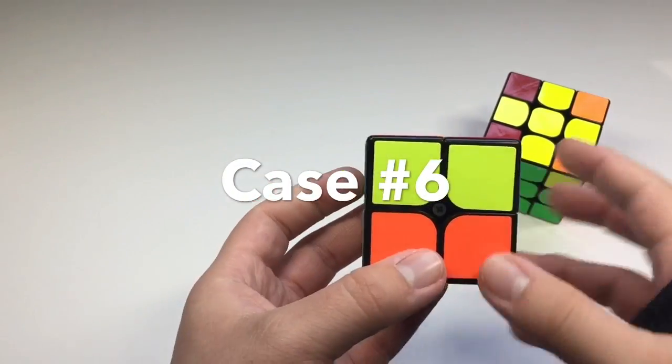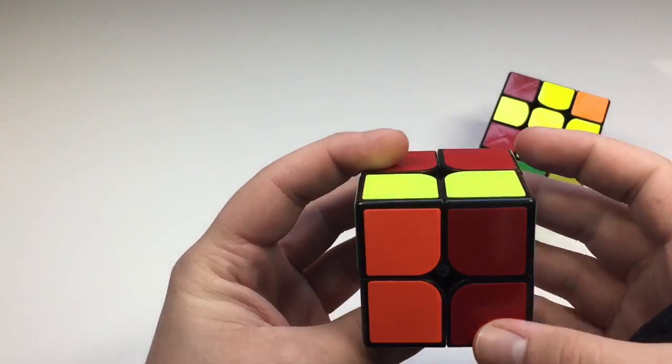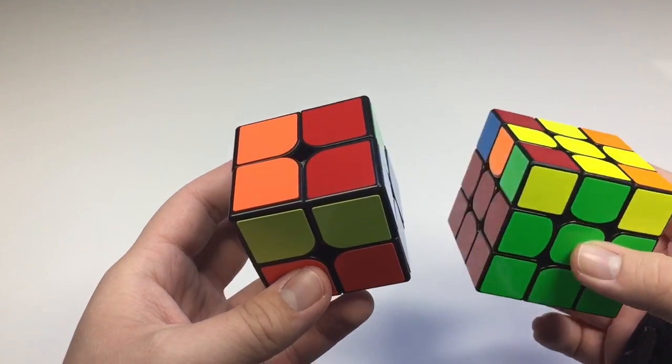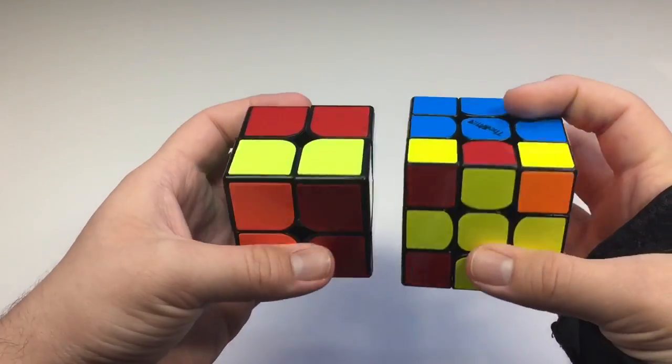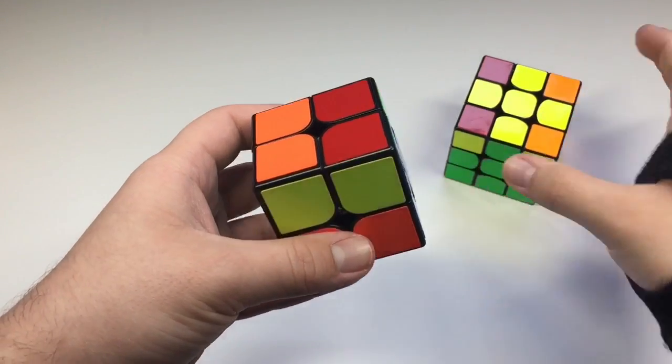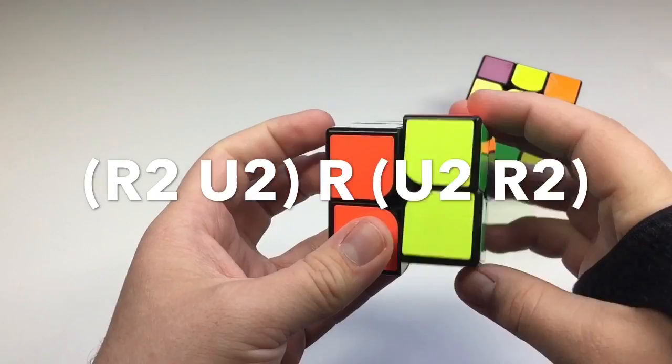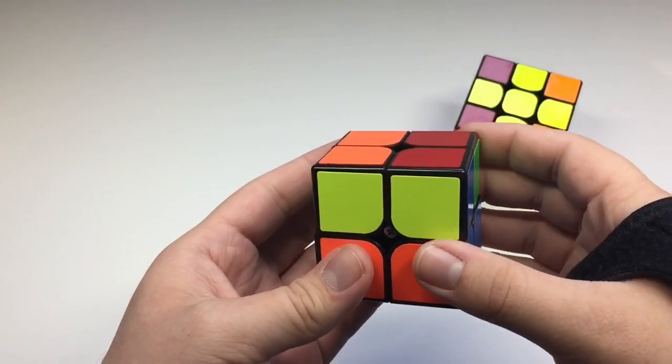This next case, you have the two yellow bar right here and another bar in the back. And this is the cross case that it looks like. So the algorithm. And perform fast.